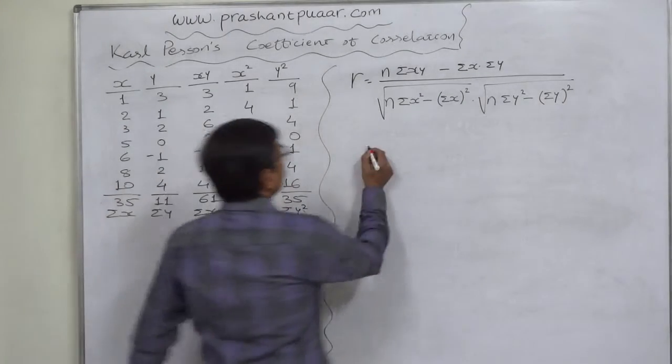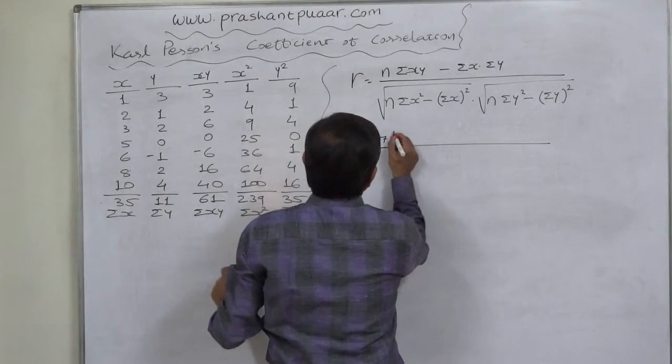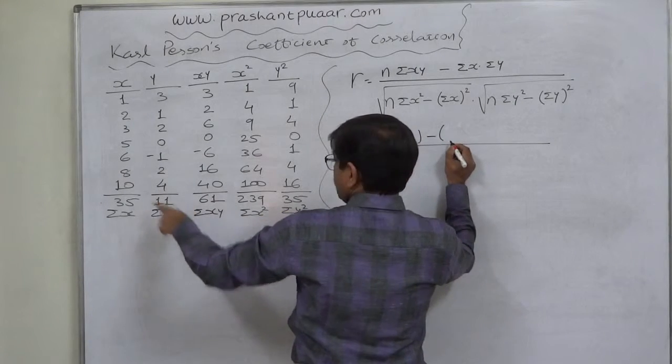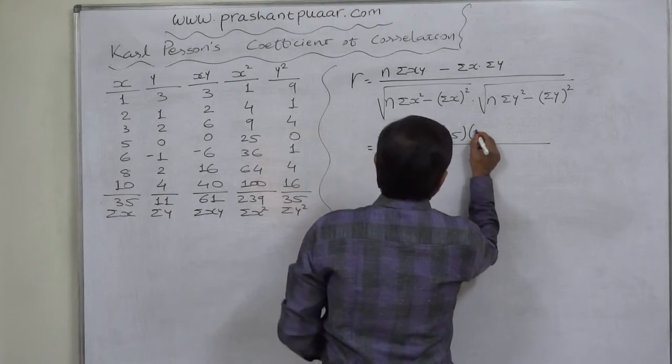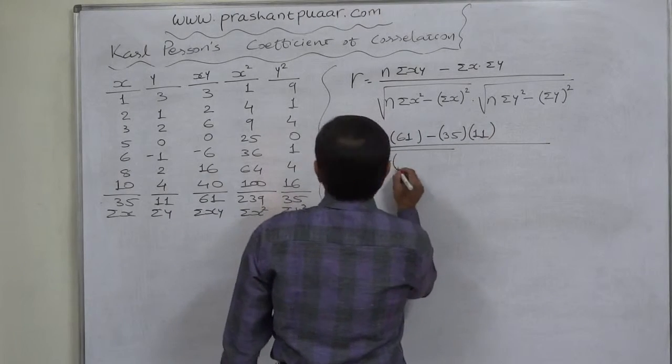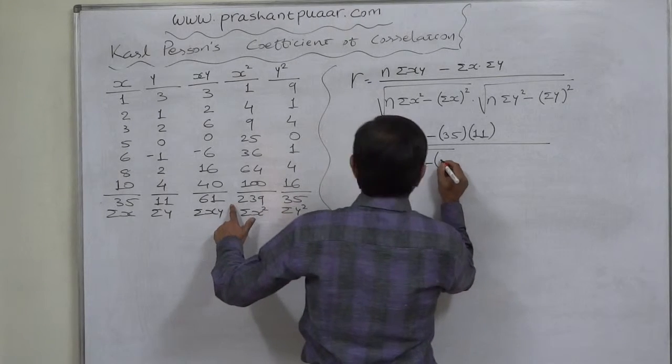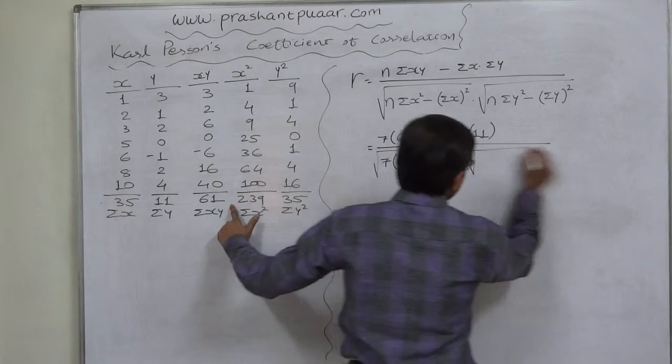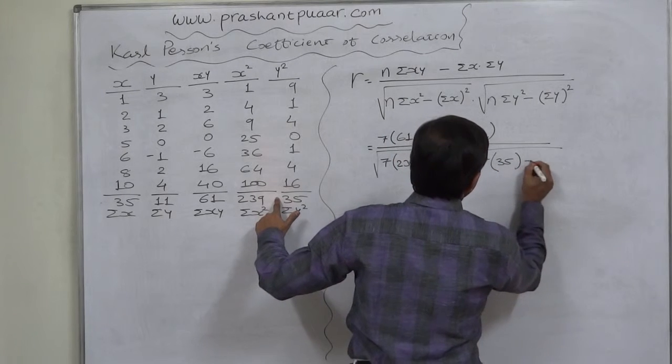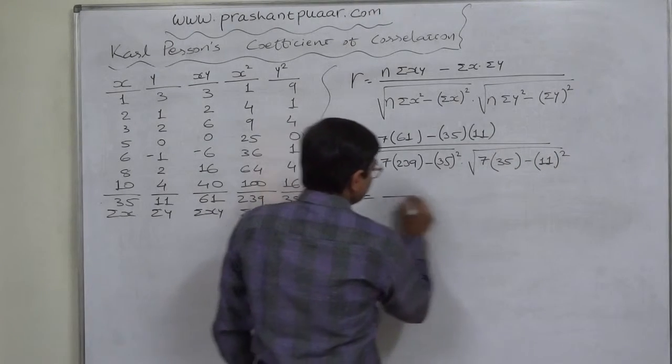N is 7, so 7 into Sigma XY, which is 61, minus Sigma X, 35, into Sigma Y, 11, the whole squared, upon under root N is 7, Sigma X squared is 239, minus Sigma X, 35, the whole squared, into under root 7 into Sigma Y squared, 35, minus Sigma Y, 11, the whole squared.